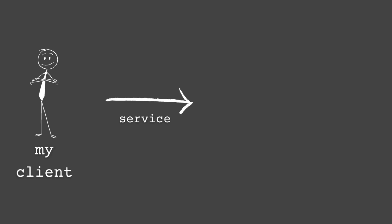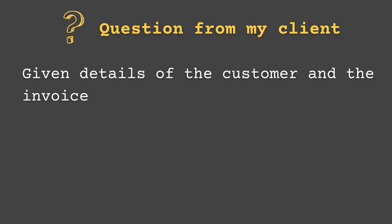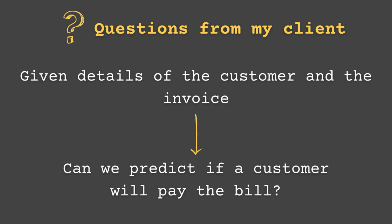Now that I have my coffee, I can give you a bit of background on this project. It's the same client from all my day in the life videos — the client actually gave me permission to post about their project. This client provides a service to customers. The service can be paid by the customer themselves or by their insurance plan. The main issue is that sometimes the client will complete the service but the customer just won't pay the bill. So my client wants to know, given the details of the service and the customer — like the type of service, the age of the customer, the type of insurance — can we predict whether the service will be paid completely or not.